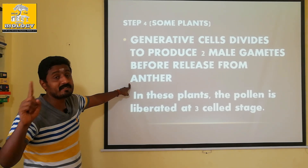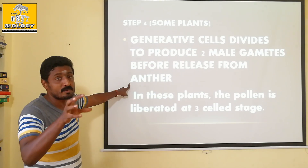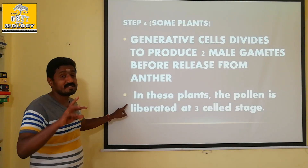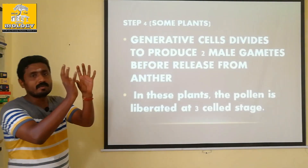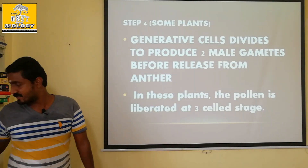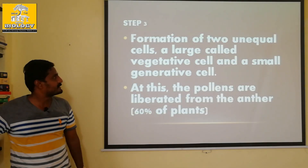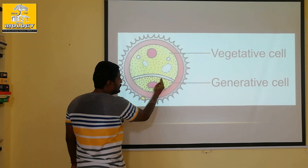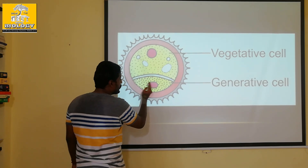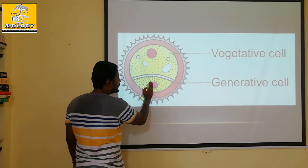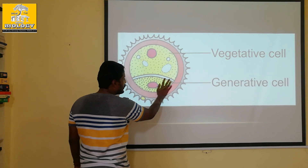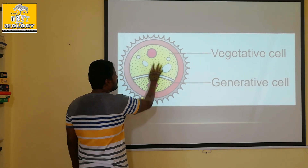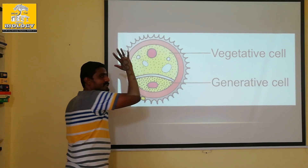Generative cells divide to produce 2 male gametes before release from the anther. This structure produces 2 male gametes — that is 2 male gametes plus 1 vegetative cell, forming the 3-cell stage.